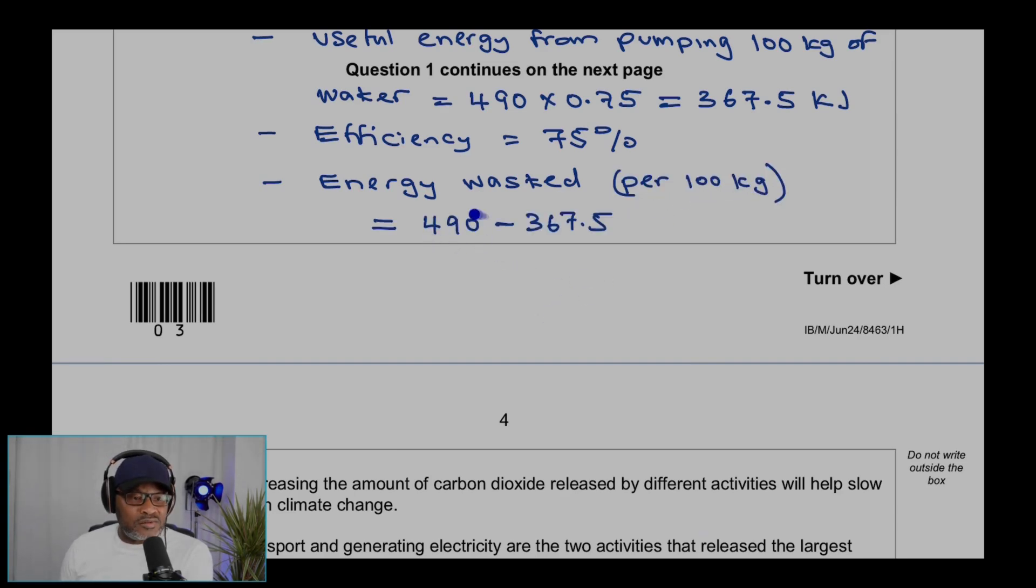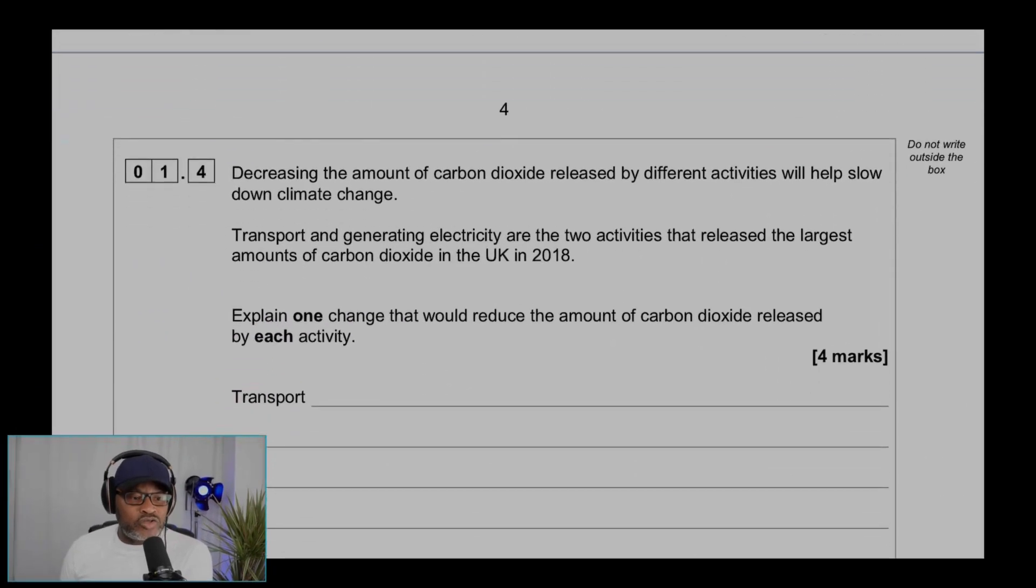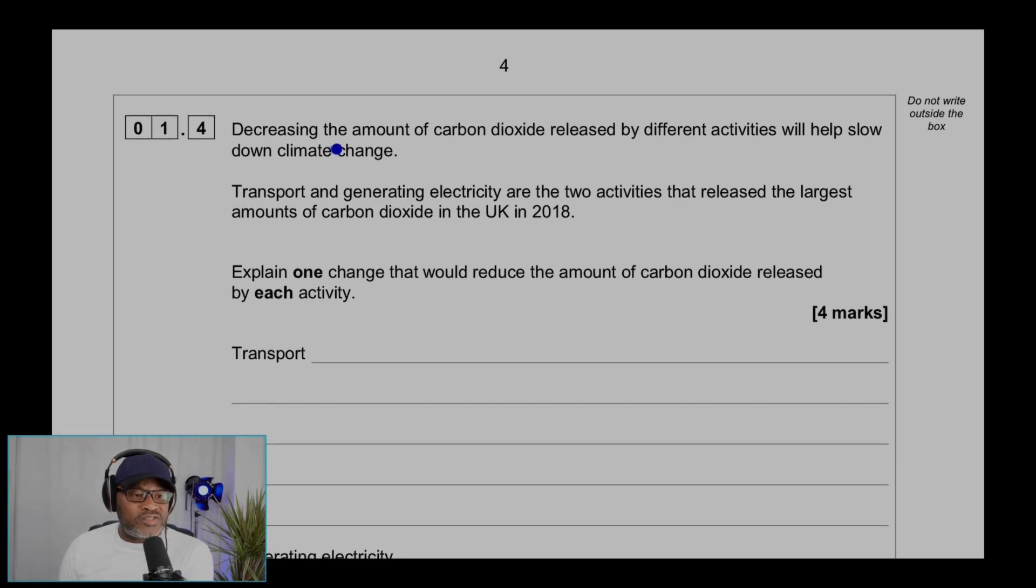Also, the energy wasted, which is 25% per 100 kilograms, will be the 490 (the actual energy) minus the energy for 75%, which is that one. What's left is the 25%, so that's the energy wasted: 122.5 kilojoules.